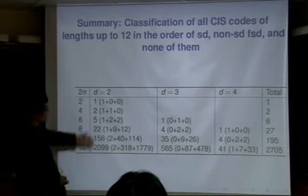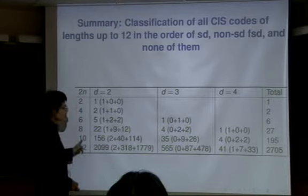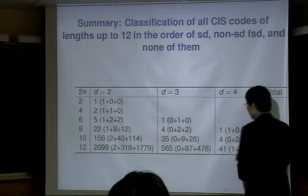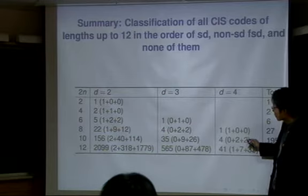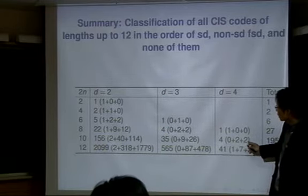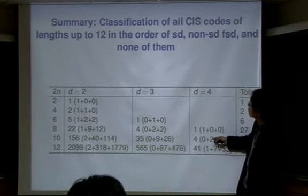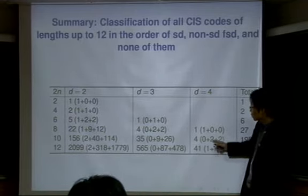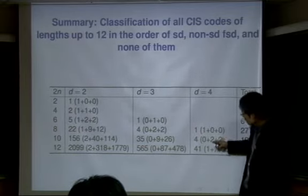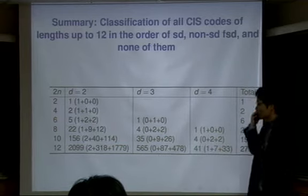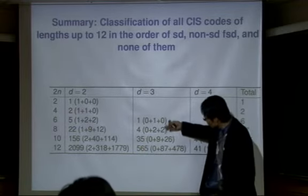Why do I have three columns? The first column represents the self-dual class. For N equals 5 (length 10), there is no self-dual code with minimum distance 4. But in the CIS code case there are 2 — meaning there are non-self-dual CIS codes with D equal 4, because CIS is a superclass. The second column is about formally self-dual codes, which is a known classification. But the third column entries are all new — these are purely new codes.